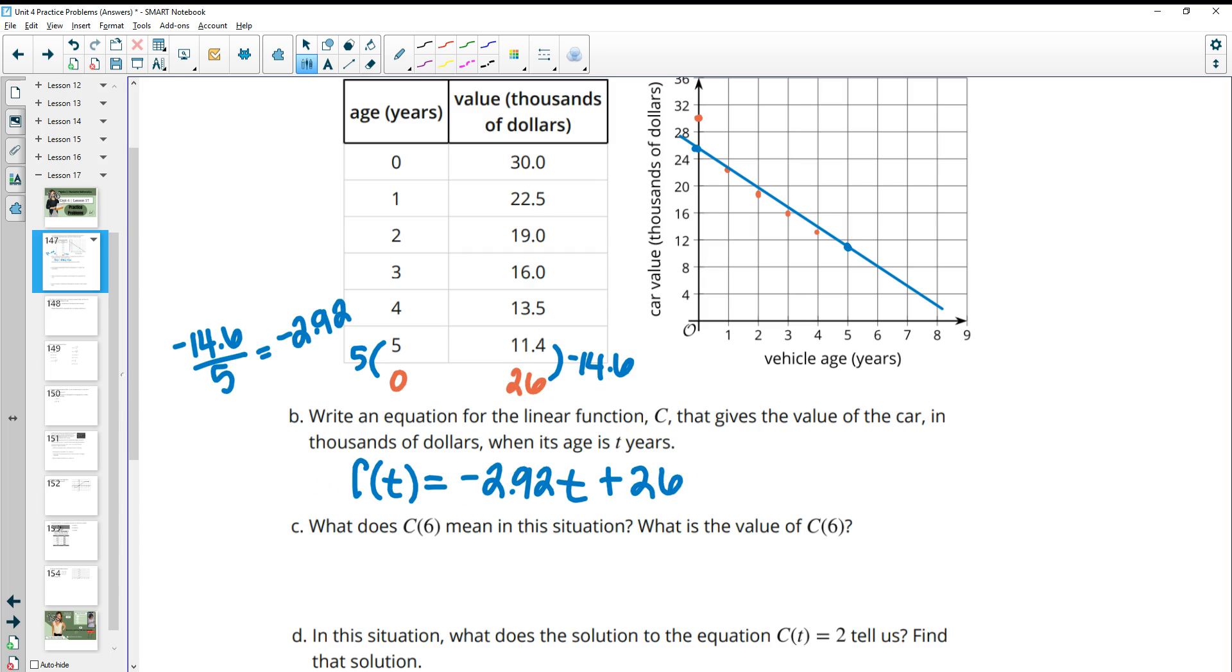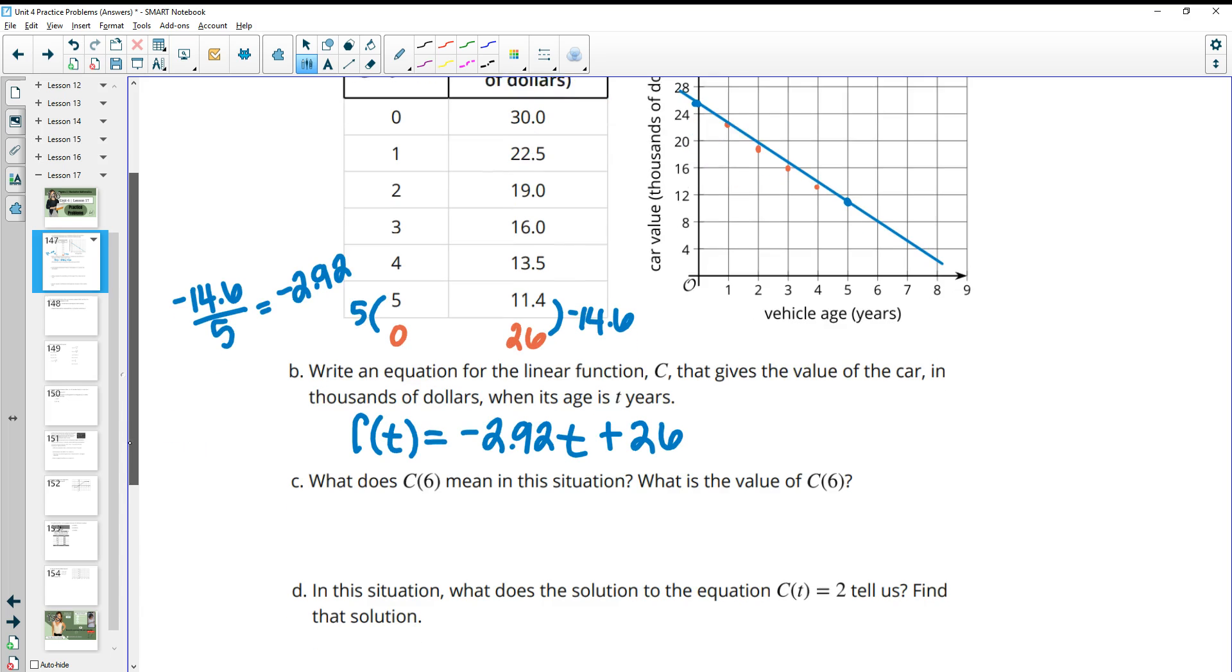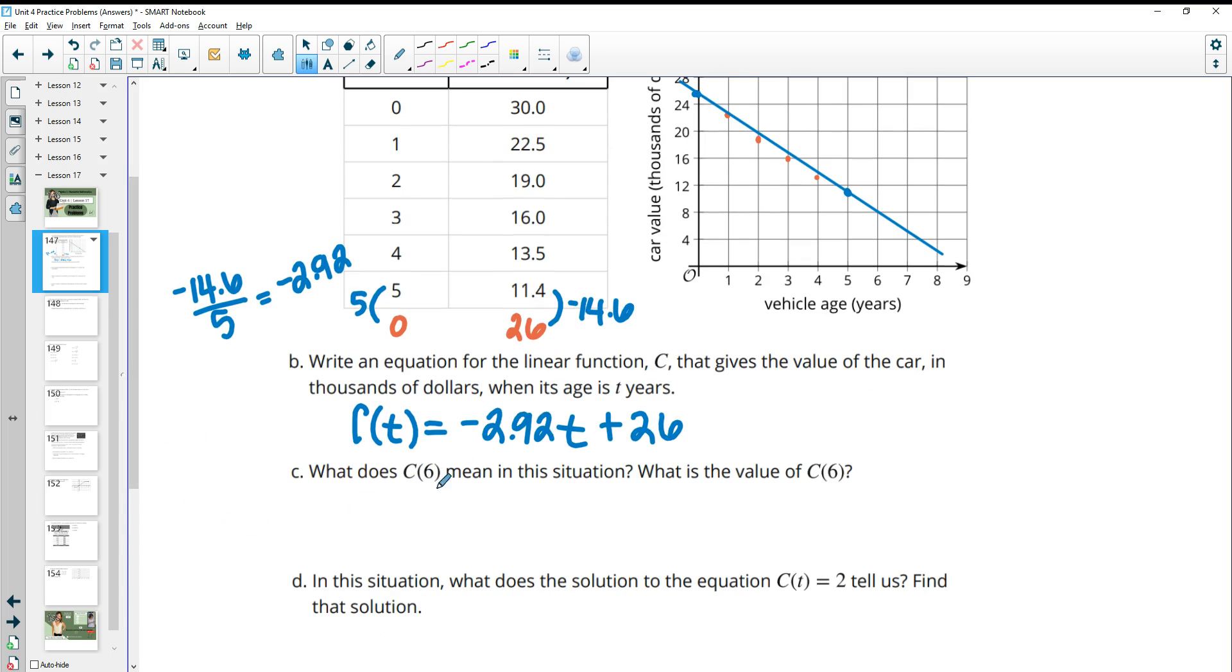And then that slope is decreasing negative 2.92 each year. So then it asks, what does C(6) mean in this situation? So C(6) is the value of the car after six years, or six years after it was purchased. Then they ask us to actually find C(6). So we can look here and look on the graph and see that it's at about 8. So at six years, mine's at about 8. So I could say 8 thousand.